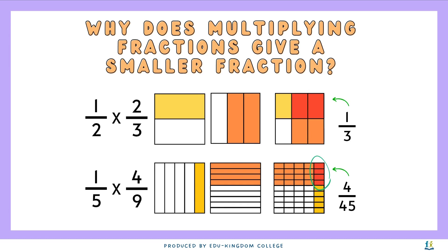With the same idea for 1 over 5 and 4 over 9: I have 1 over 5 coloured in yellow and 4 over 9 coloured in orange. Once you put them together, the only part that overlaps is going to be 4 over 45.